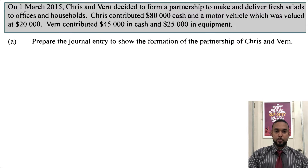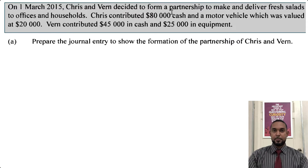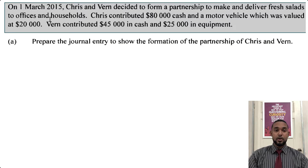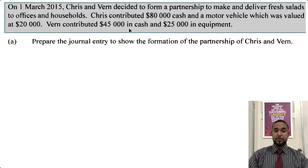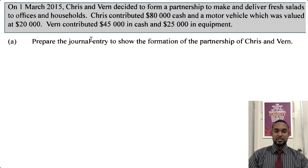This is question 1 — we have a partnership question. On 1 March 2015, Chris and Verne decided to form a partnership to make and deliver fresh salads to offices and households. Chris contributed $80,000 cash and a motor vehicle valued at $20,000. Verne contributed $45,000 in cash and $25,000 in equipment. Prepare the journal entry to show the formation of the partnership of Chris and Verne.